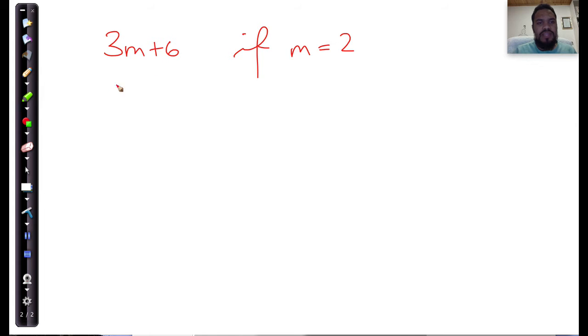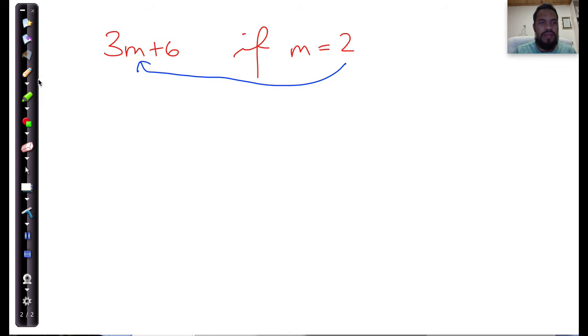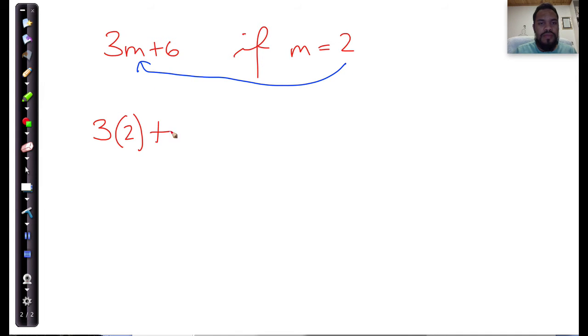That's quite simple. This means that I need to substitute, I need to replace the m value with the given value of 2 into that m. So that's going to change my equation as follows. It will become 3, the m changes to 2, plus 6.